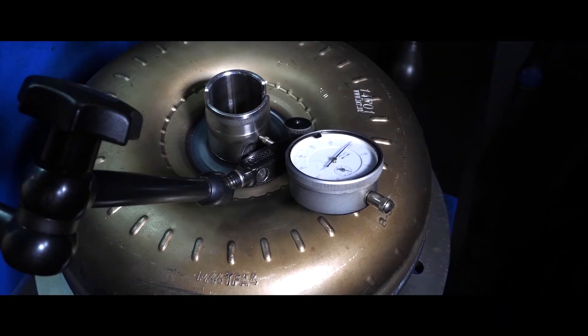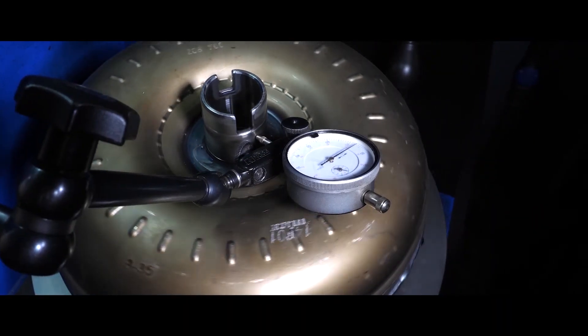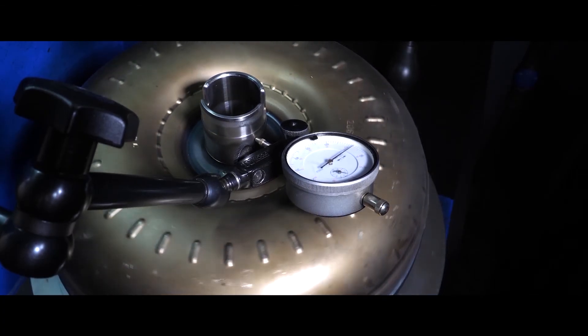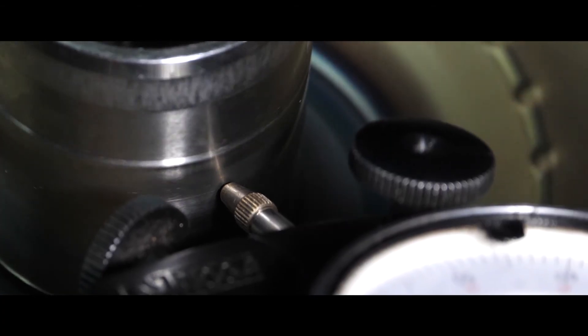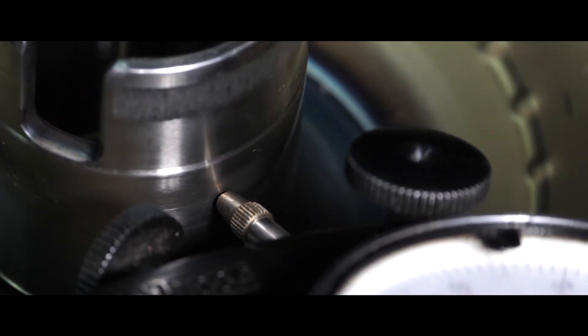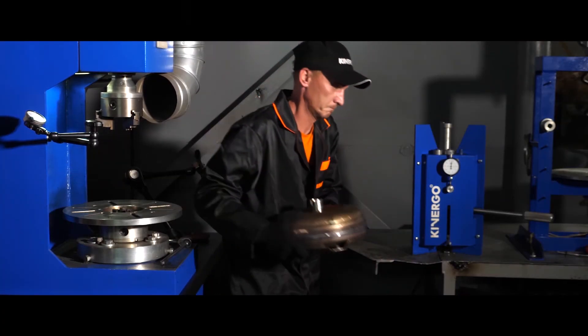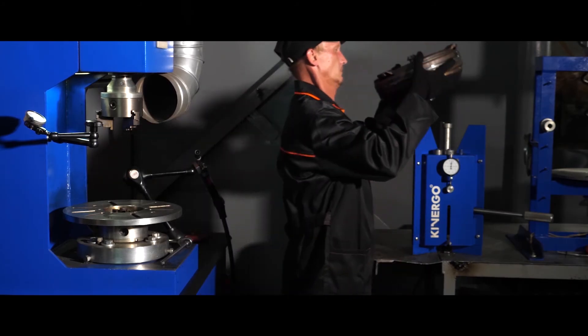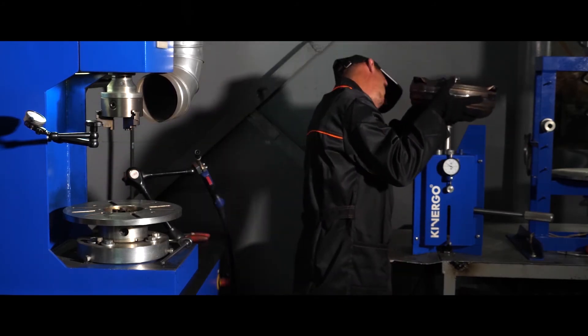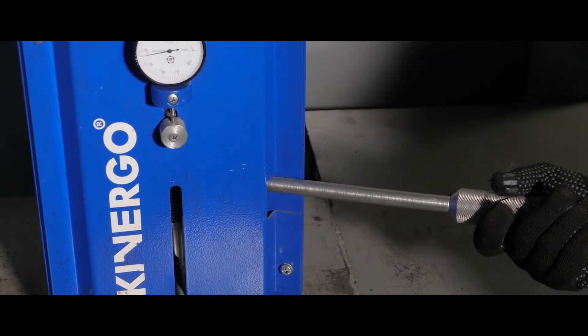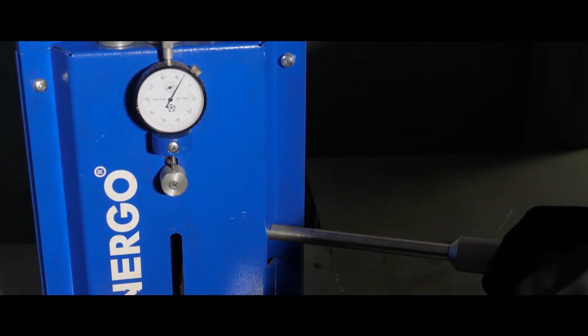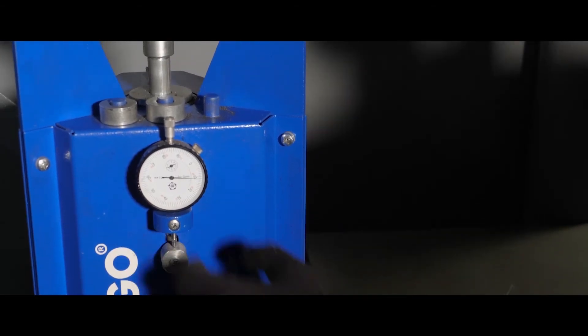At the end of welding, the operator checks the axle run-out tolerances. Allowable value is up to 0.2 mm. The next step is to check the resulting thermal gap. The stand allows you to determine the size of the thermal gap into converters of various designs, both before and after repair, with an accuracy of 0.01 mm.